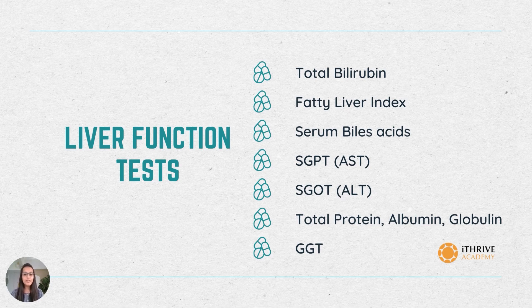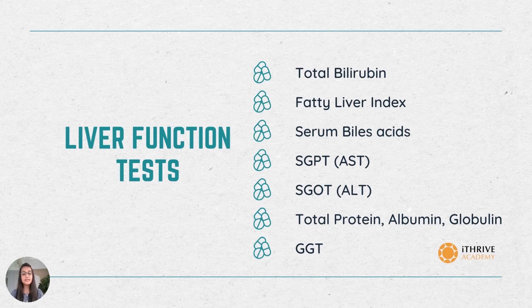Next is SGPT, which also stands for AST. SGPT stands for serum glutamic pyruvic transaminase. This is an enzyme which is usually made in the liver, and the levels can increase if there is a problem in the liver.